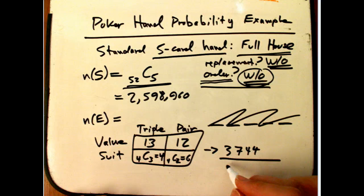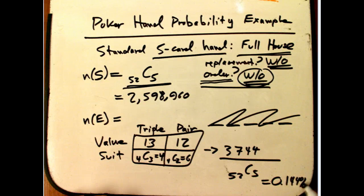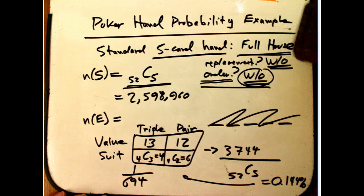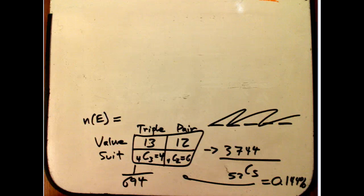Then we divide by 52C5, giving us a probability of about 0.144%, or roughly one out of 694. So you'll see a full house about one out of every 700 hands on average — not something you'd never see if you're a regular poker player. Of course, in lots of poker games you get to choose the best 5 out of 7, or you draw cards back, so you'll see a lot more full houses, because those variations inflate the odds of getting a good hand.